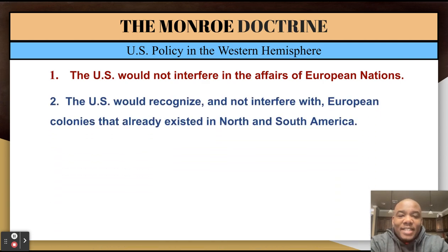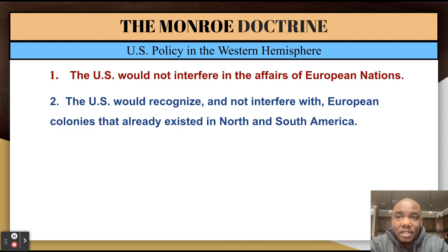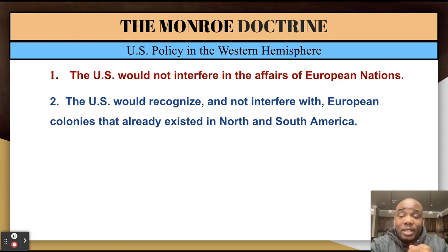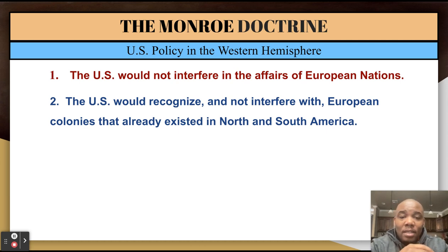The second point: the U.S. would recognize and not interfere with European colonies that already existed in North and South America. For example, Great Britain had what is now Canada. We're not going to try to take that colony away or move Great Britain out of Canada. We recognize that is your territory, there is a border, and we won't interfere or try to take that land away. You can have that established land, and we recognize the border between our two nations.